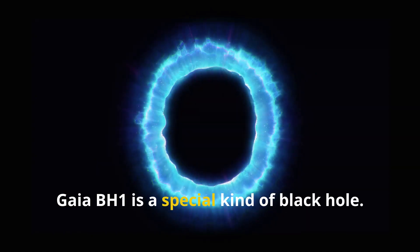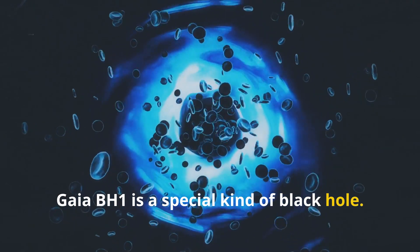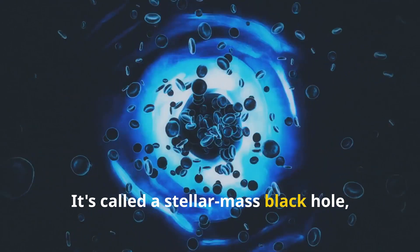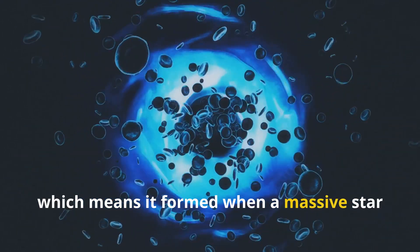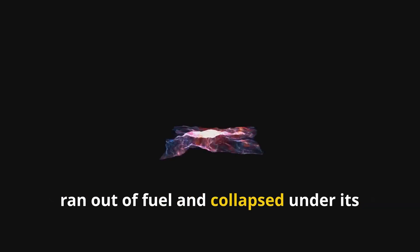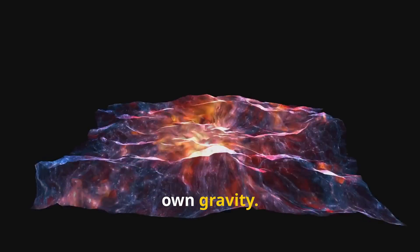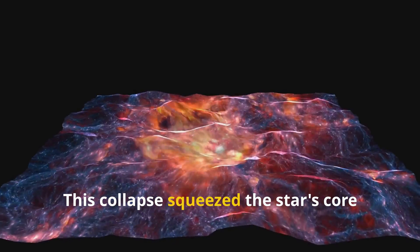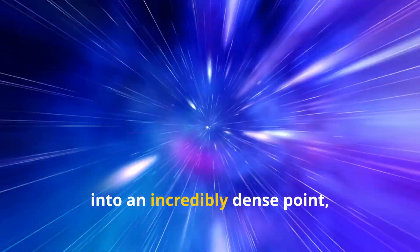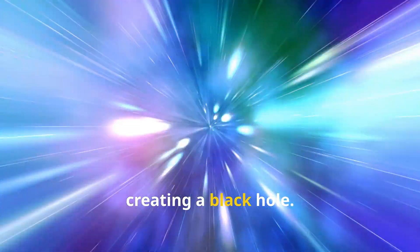Now, Gaia BH1 is a special kind of black hole. It's called a stellar mass black hole, which means it formed when a massive star ran out of fuel and collapsed under its own gravity. This collapse squeezed the star's core into an incredibly dense point, creating a black hole.